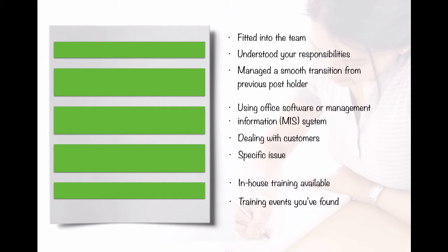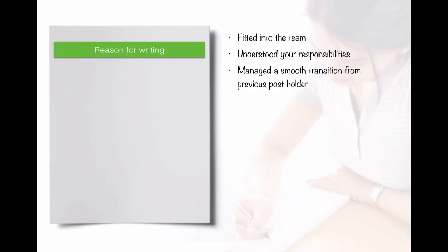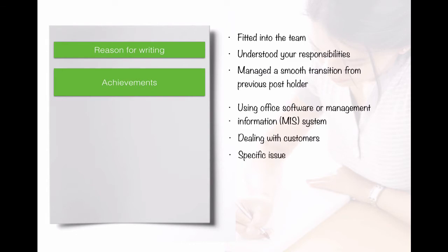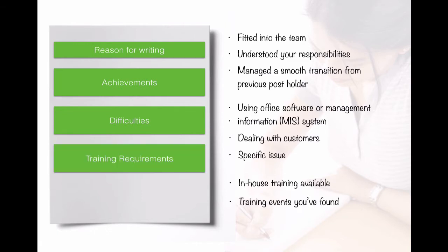This fits into a five-paragraph model. In the first paragraph we explain our reason for writing the report — a short introductory paragraph. Then a paragraph describing our achievements, a separate paragraph outlining any problems, another paragraph looking at training, and finally a closing paragraph that acts as a conclusion. Five paragraphs altogether.